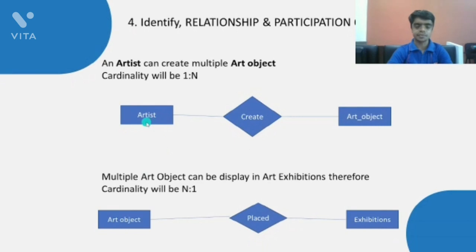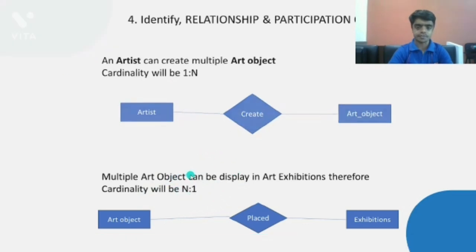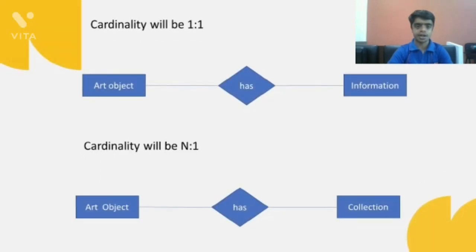Step four: show relationships between the entities. An artist can create multiple art objects — that is, the cardinality is one-to-many. Similarly, an art object is displayed in an exhibition; here the cardinality is many-to-many. Similarly for the other entities, art object has information with cardinality one-to-one, and cardinality is many-to-one when art object has collection.